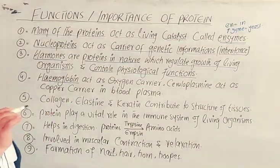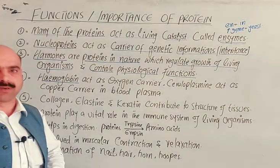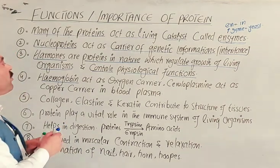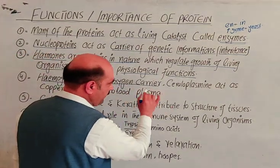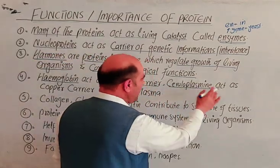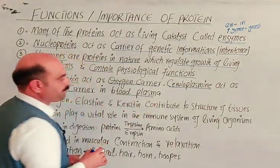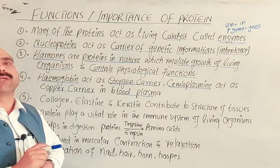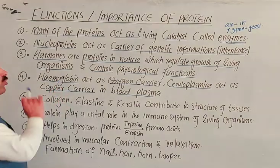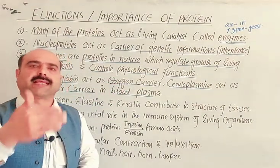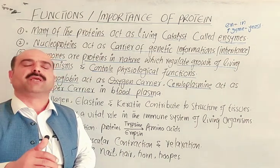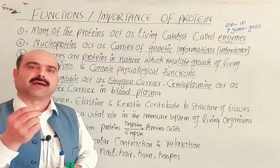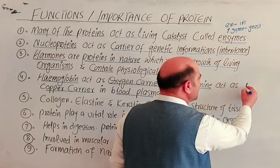Hemoglobin is a coordination complex of iron, red in color, found in blood. It is protein in nature. Hemoglobin is an oxygen carrier — it carries oxygen to every cell of the body. Each cell receives oxygen which is then used to oxidize food, releasing carbon dioxide, water, and energy.